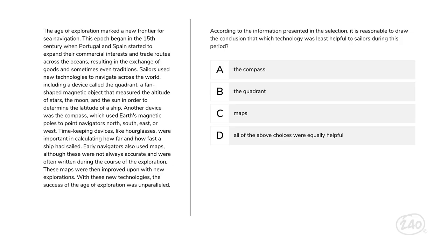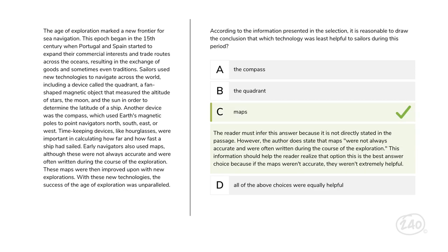Ready to make an inference? According to the information presented, it is reasonable to infer which technology was the least helpful to sailors during this period. The author never directly states this, but we can infer that maps were the least helpful because the author tells us that maps were not always accurate and were often written during the course of the exploration. We made a logical leap there for sure.